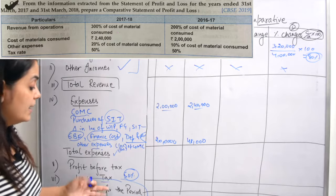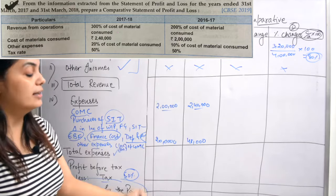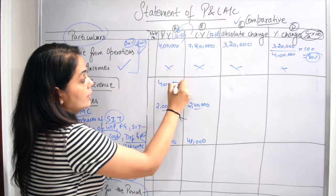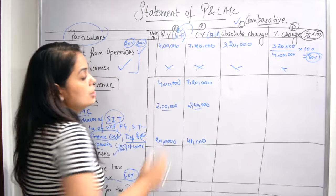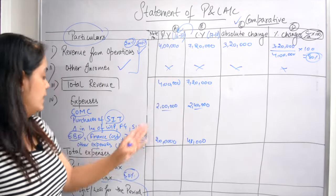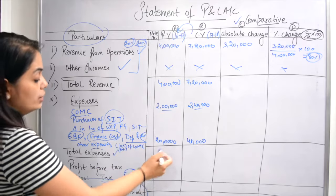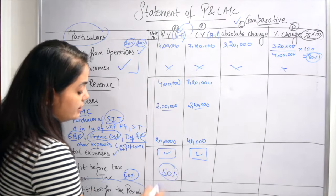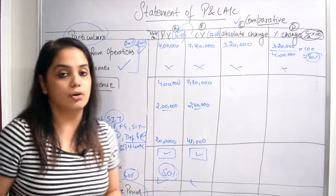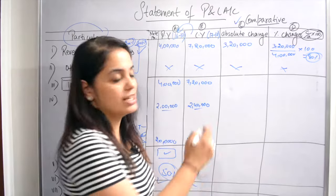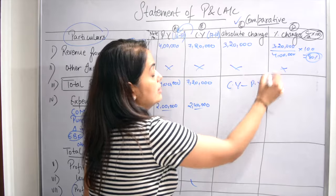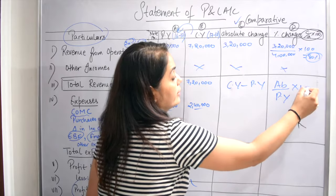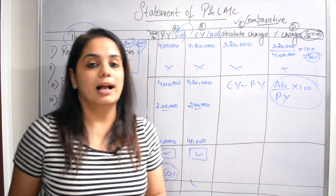Now we have all the figures written. The tax rate of 50% is given. Total revenue for the previous year is 4 lakhs and current year is 7 lakhs 20,000. We will minus the expenses from total revenue. Whatever value comes, we apply the tax rate, and after that we get profit or loss for the period. Then we remove absolute change as current year minus previous year, and percentage change as absolute change divided by previous year into 100. Very simple.